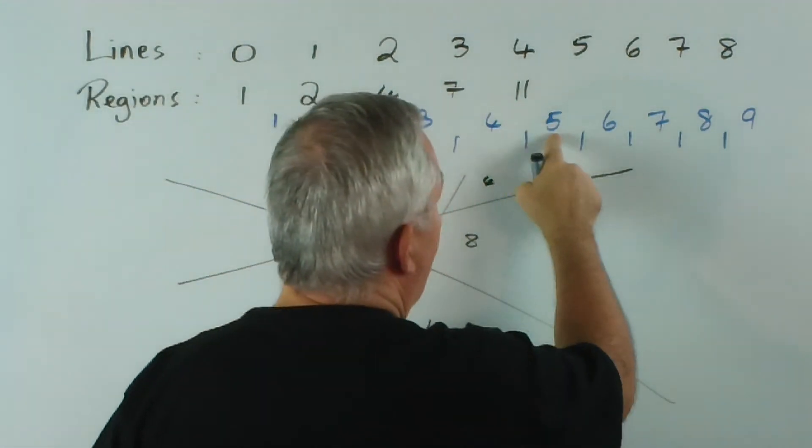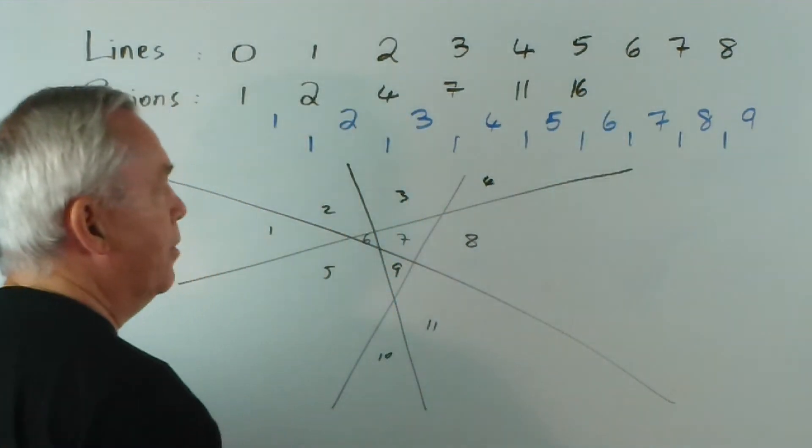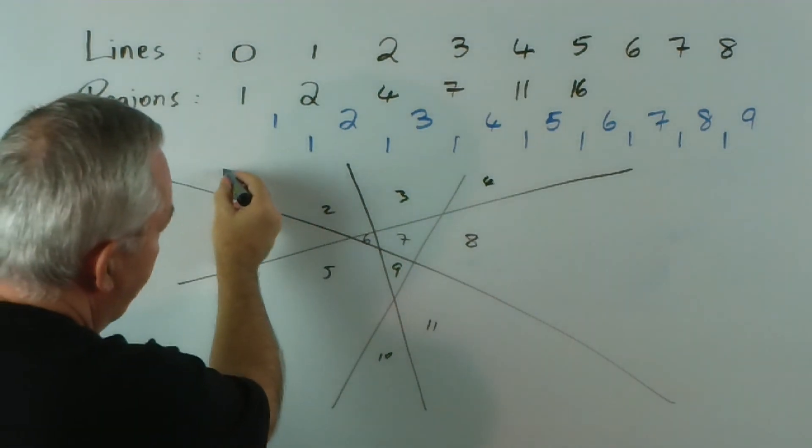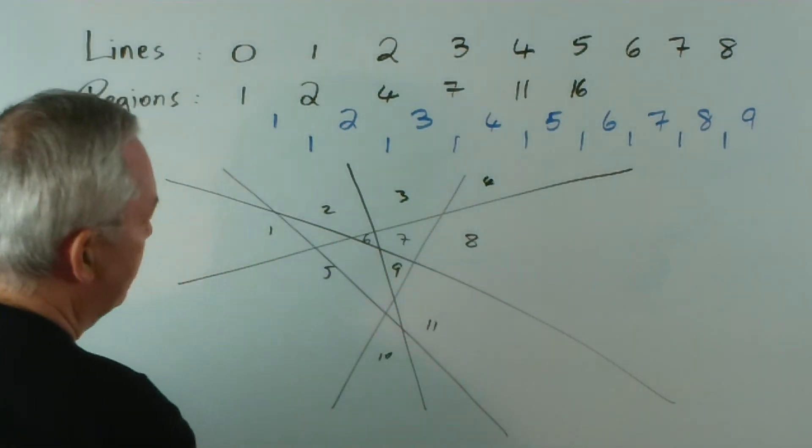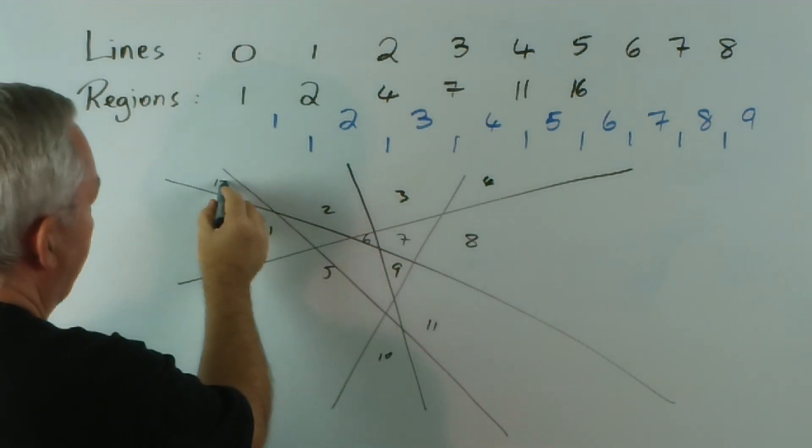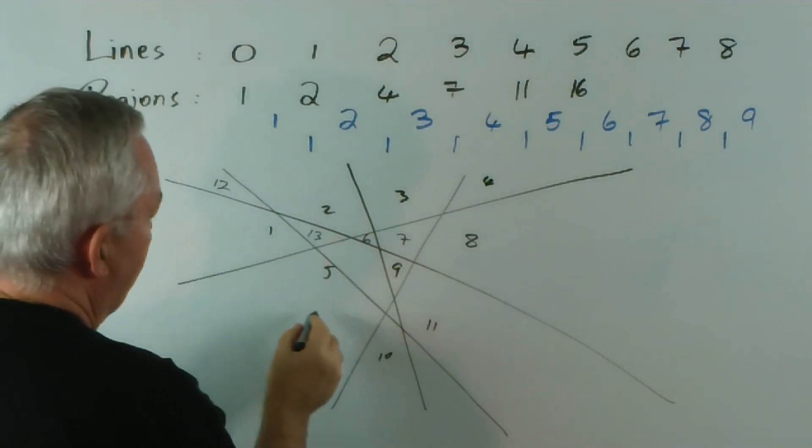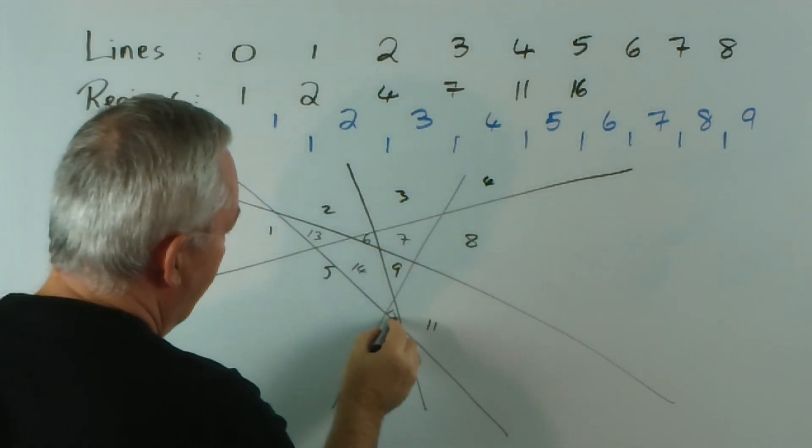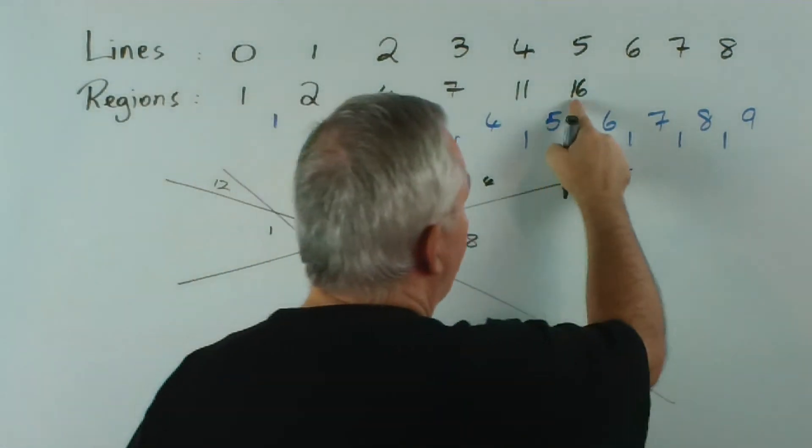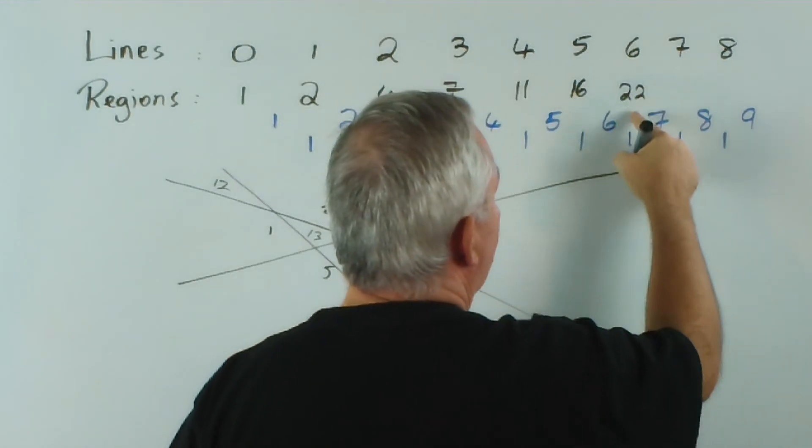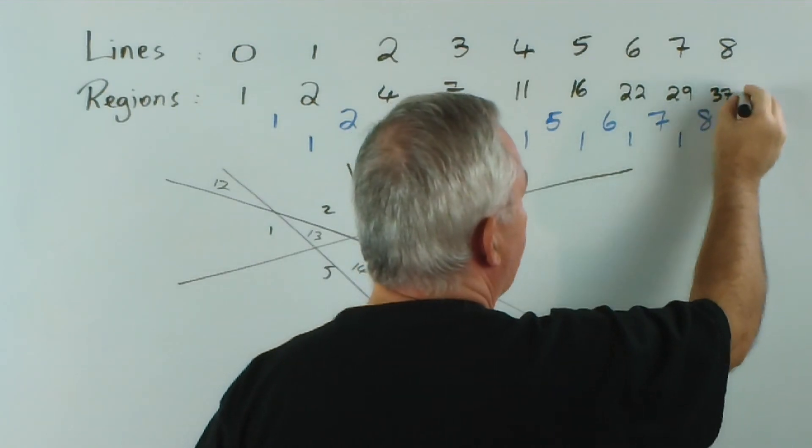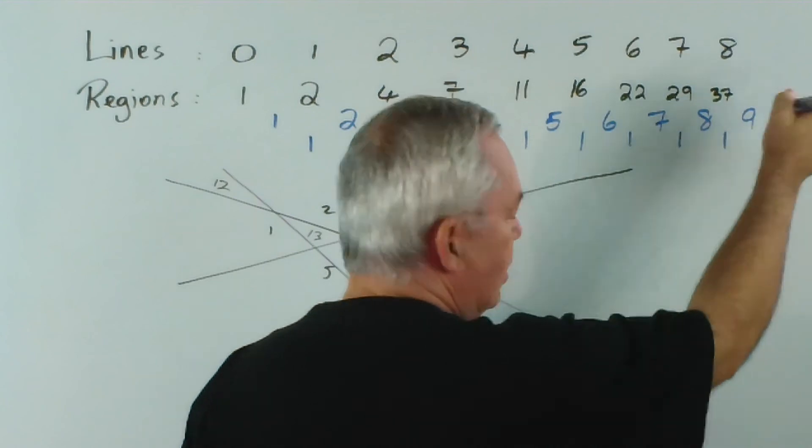If we add 5 to 11, we get 16. So, if I put a 5th line down, let's try to do that. Let's say through there. I've created another one, I've created another one. An 11th, sorry, there's 11, 12th, 13th, 14th, 15th, 16th. And if I keep going, 16 plus 6, that's 22. 22 plus 7, 29. 29 plus 8, 37. 37 plus 9, 39 and so forth.